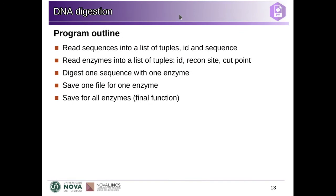Let's start with the outline of our program. We need to read the sequences and know which sequence corresponds to which identifier — we'll create a list of tuples where each tuple has the identifier and the string of the sequence. We also need to do the same for the enzymes, which need three things: the identifier, the recognition site, and the cutting point. Then we need a function to simulate the digestion of one sequence with one enzyme. And we also need to write a function to write one file for one enzyme, then call that for each different enzyme.